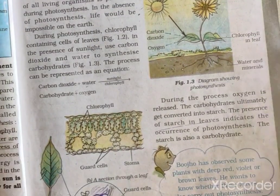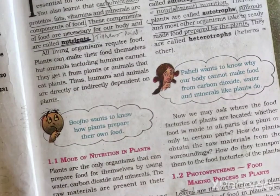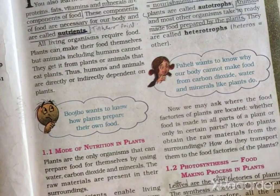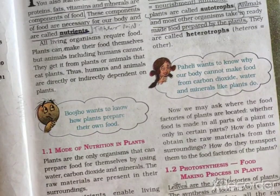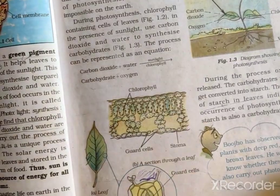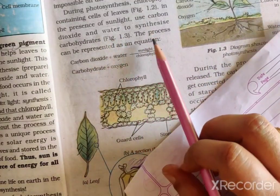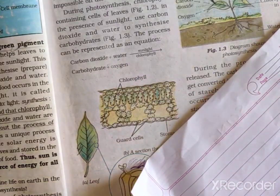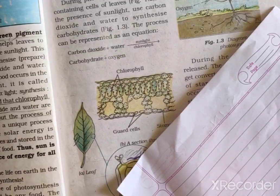Hello students, welcome to science class. In the previous video we learned about photosynthesis — how plants get their nutrition and make their food. As you know, leaves are the food factory of plants. They synthesize food with the help of chlorophyll, sunlight, carbon dioxide, water, and minerals. During photosynthesis, chlorophyll-containing cells of leaves use carbon dioxide and water in the presence of sunlight to synthesize carbohydrates.